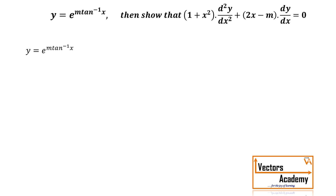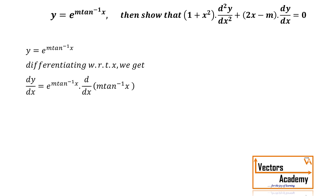We will start by differentiating for the first time. Now dy by dx: the derivative of e raised to x is e raised to x, so e raised to m·tan⁻¹x remains the same. But by the chain rule, we will have the derivative of m·tan⁻¹x. Now m is a constant, so it comes out of the derivative.